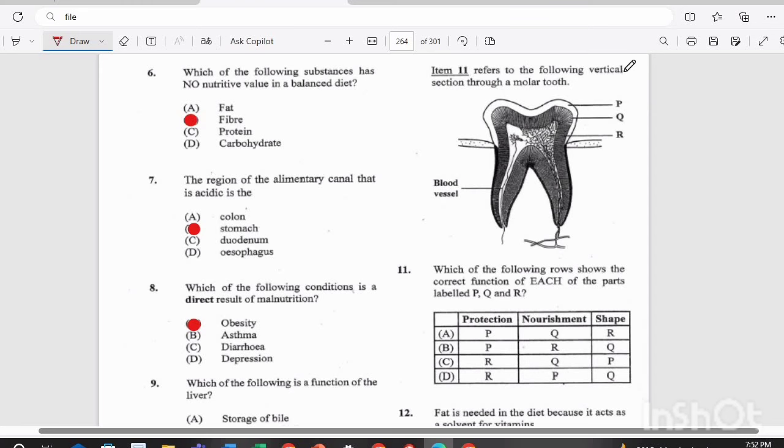Question 11. Item 11 refers to the following vertical section through a molar tooth. Which of the following rows shows the correct function of each of the parts labeled P, Q, and R? A. P is for protection, Q is for nourishment, R is for shape, B. P is for protection, R is for nourishment, Q is for shape, C. R is for protection, Q is for nourishment, P is for shape, or D. R is for protection, P is for nourishment, and Q is for shape. What's your answer? If you said B, you are correct. P, your enamel is for protection, Q is the dentine, that actually gives it its shape, and R is the pulp cavity here, which actually has all of those cells and blood vessels that actually keep your tooth nourished.